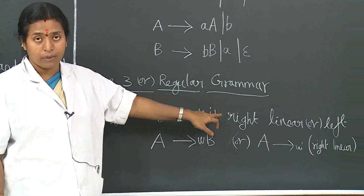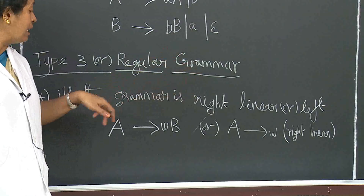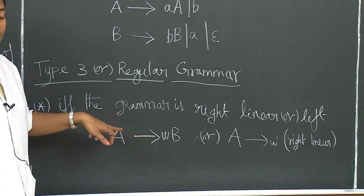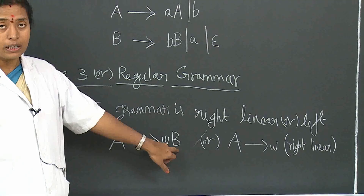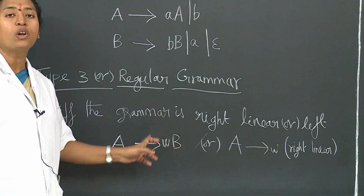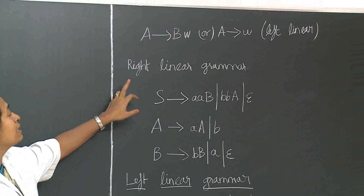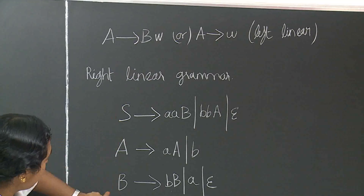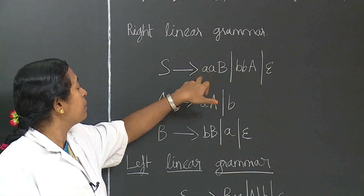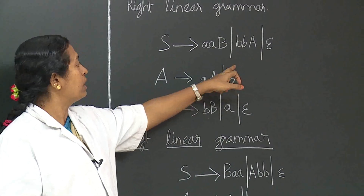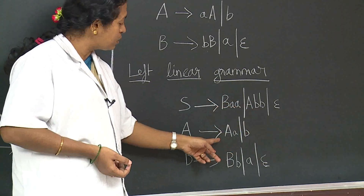The final type is type 3 or regular grammar, which is different from the remaining three grammars. This grammar is type 3 or regular only if the grammar is right linear or left linear. Right linear means A derives some string W followed by a non-terminal. If W is present before the non-terminal, it is known as right linear. If W is present after the non-terminal, it is known as left linear. In right linear grammar, the terminal string W appears before the non-terminal in each production. Thank you.